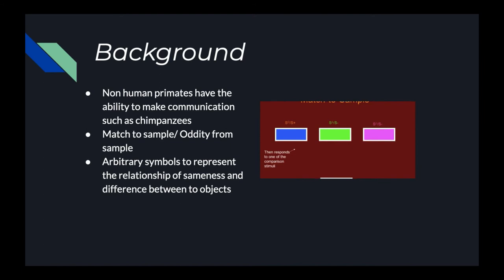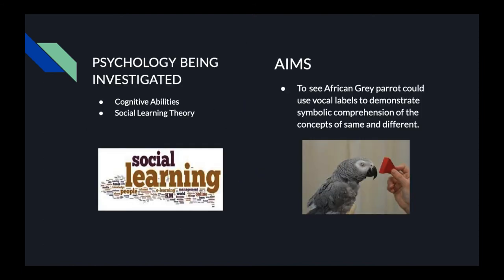So let's get into the psychology being investigated. The psychology being investigated here, we are investigating two things. One is the cognitive abilities, the cognitive abilities that are required for the conceptualization of the category of same and different, the conceptual skill of that. We are looking into that. And we are also looking into social learning theory.